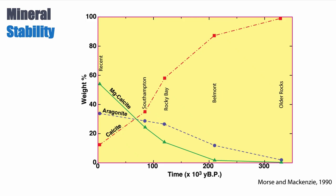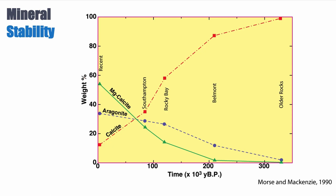Let's explore what happens to carbonate minerals when they're exposed to meteoric conditions. In this diagram, you see the weight percent of different minerals from 0 to 100 percent — the cumulative weight percent comes to 100 percent — and the time of exposure of these minerals to meteoric conditions. This is for limestone from the Bahamas. In modern sediments, we have mostly high-Mg calcite, almost 60 percent. The second most important mineral is aragonite, and the least abundant in recent sediment is calcite, at less than 20 percent of the assemblage.